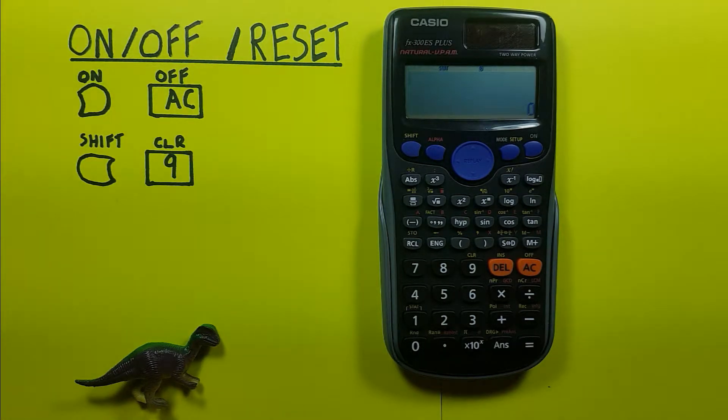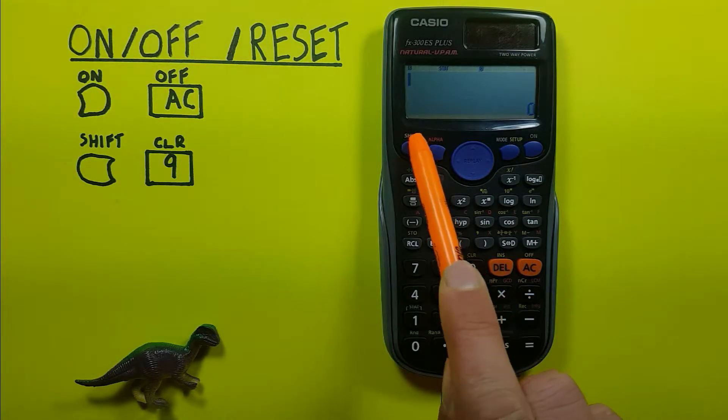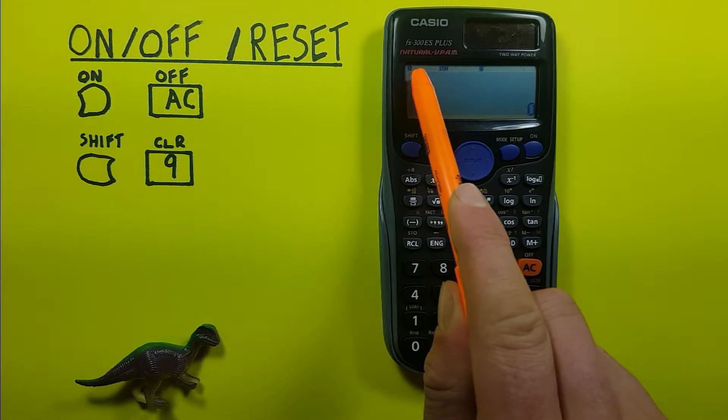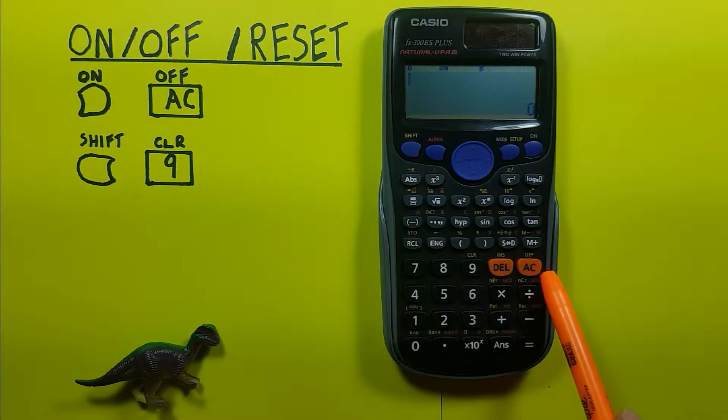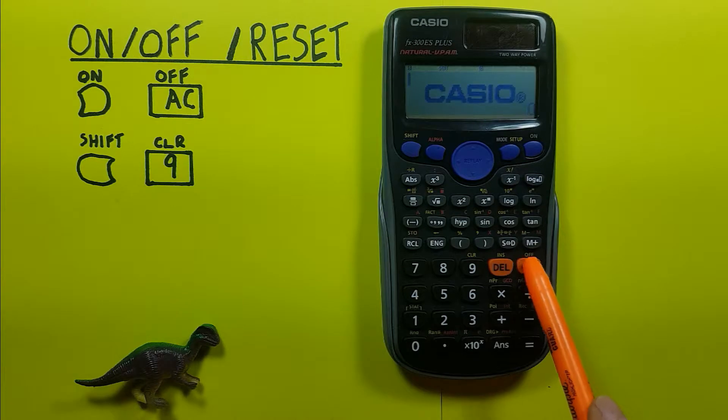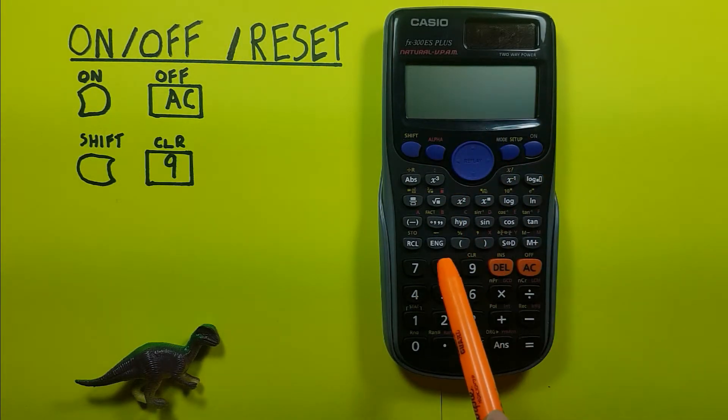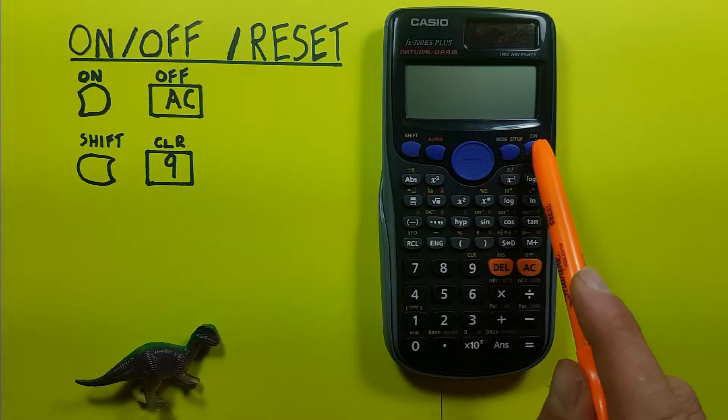If we're done with our calculations and want to turn it off to save our battery, we can do that by pressing the shift key. You see the little S in the top there that tells us we're in shift mode, and then the AC key with the shift mode of turning off. There you go, you can see there's nothing on our screen and if we hit buttons nothing happens. All right, turning it back on with the on key.